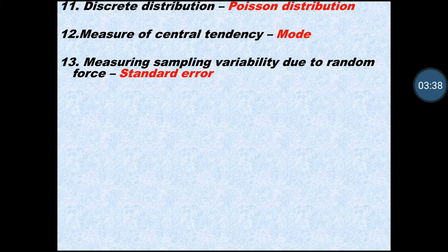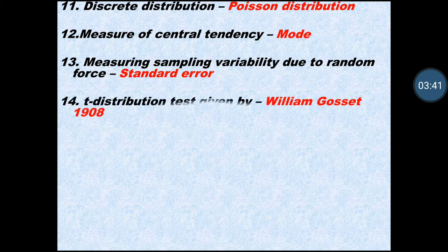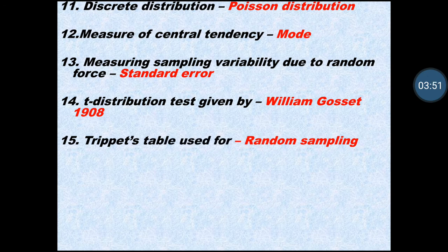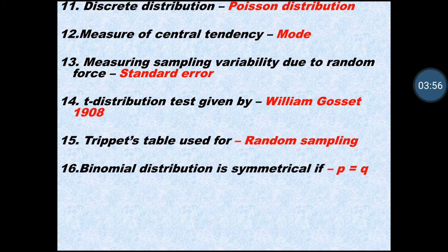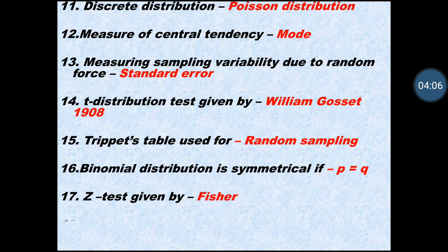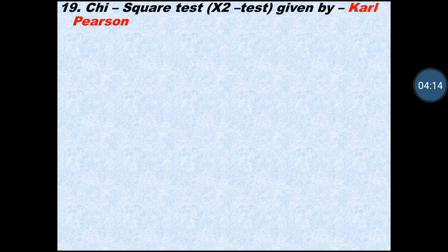Measuring sampling variability due to random forces — the answer is standard error. The t-distribution test was given by William Gosset in 1908. The Tippett table is used for random sampling. Binomial distribution is symmetric when p equals q.